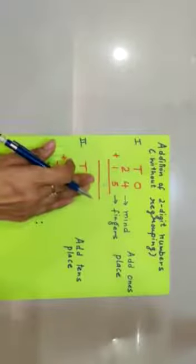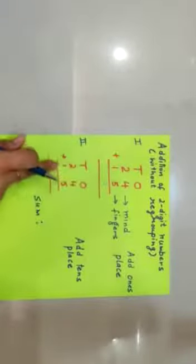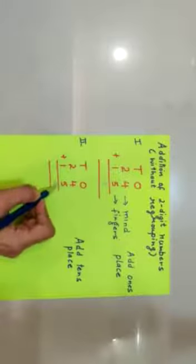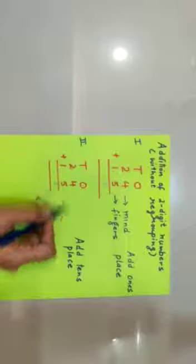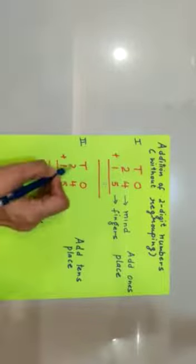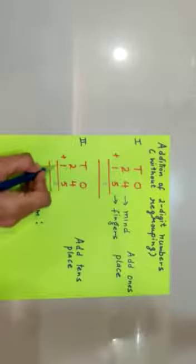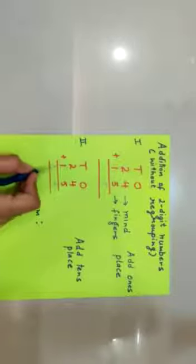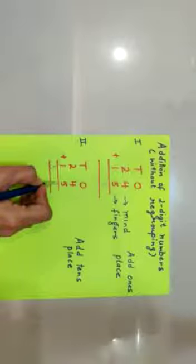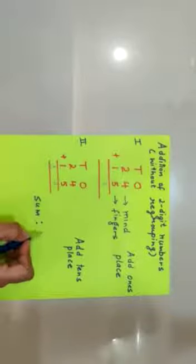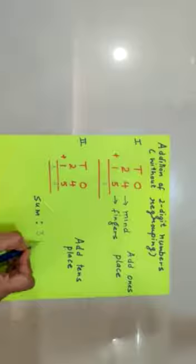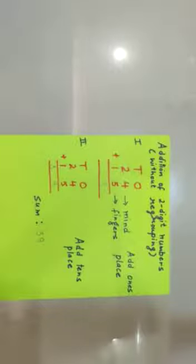Now in the second step, ones column you have already added, so now we are going to move on to tens column. Add tens place: 2 in mind, 1 on finger, 2 plus 1 gives us 3. So the answer is 39, and the answer of addition is known as sum or total. So sum is 39. I hope this much is clear to you.